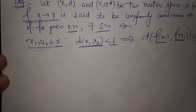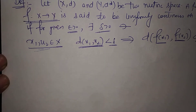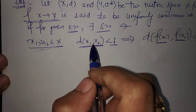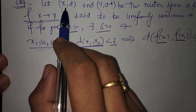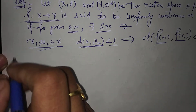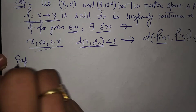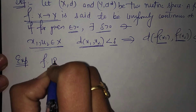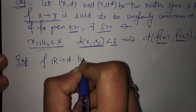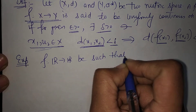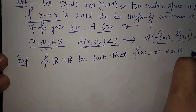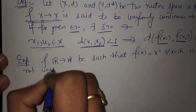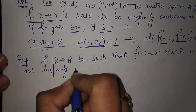Uniform continuity is always talked of on a metric space as a whole — it is never talked of at a point. Now we have an example: let f from ℝ to ℝ be such that f(x) = x² for all x in ℝ. Then show that this function is not uniformly continuous.